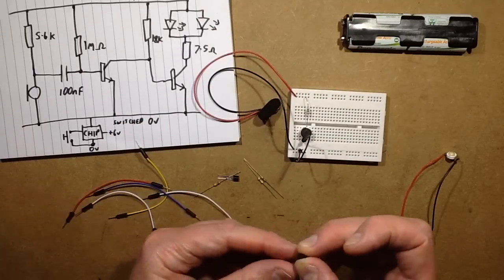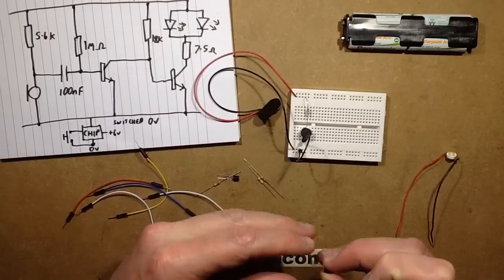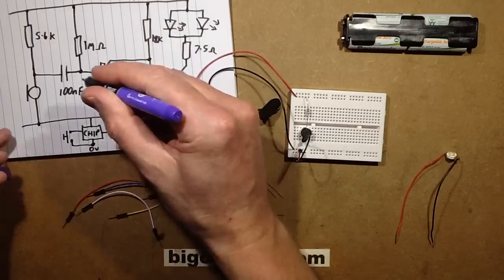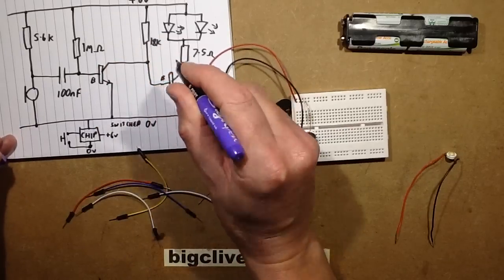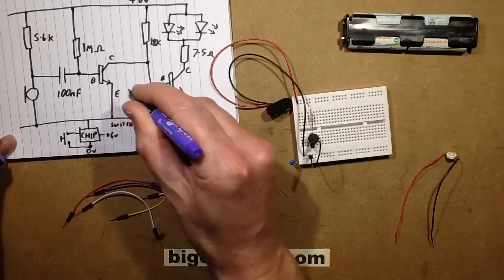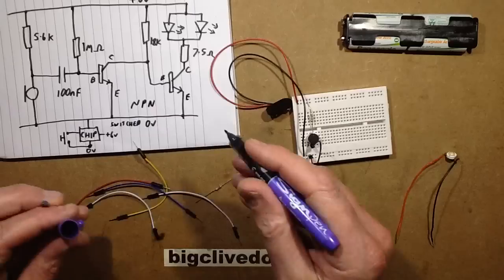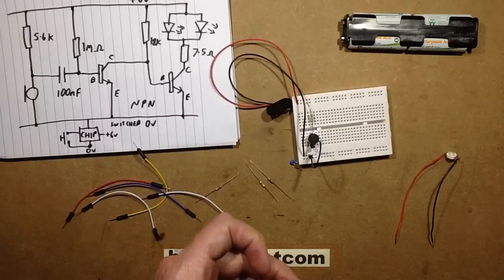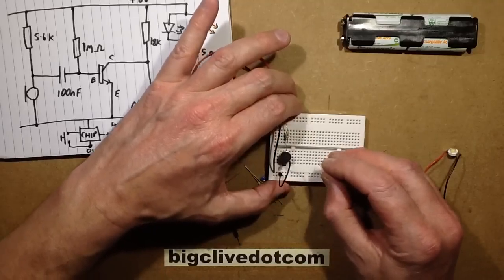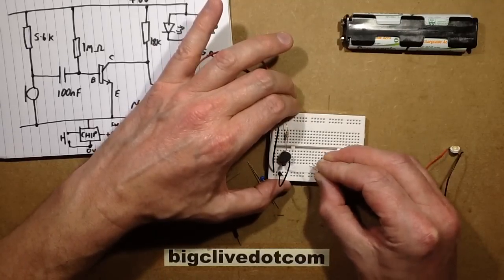Next I need the first transistor stage. You'll have to check what's your base, collector and emitter. I should actually write that in the drawing. Base, base, collector, collector and emitter. These are all NPN transistors. Let's put this transistor about... keep it well spaced. Put it about there and I'll just splay the leads and plug them in. I might as well do the same with the other transistor.